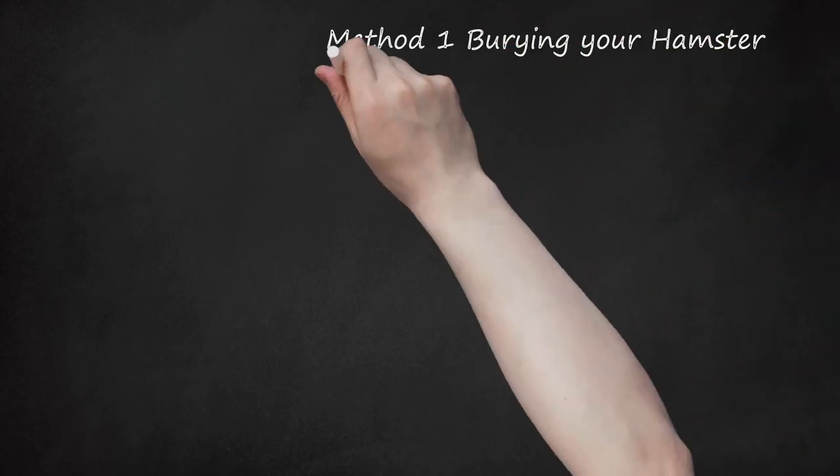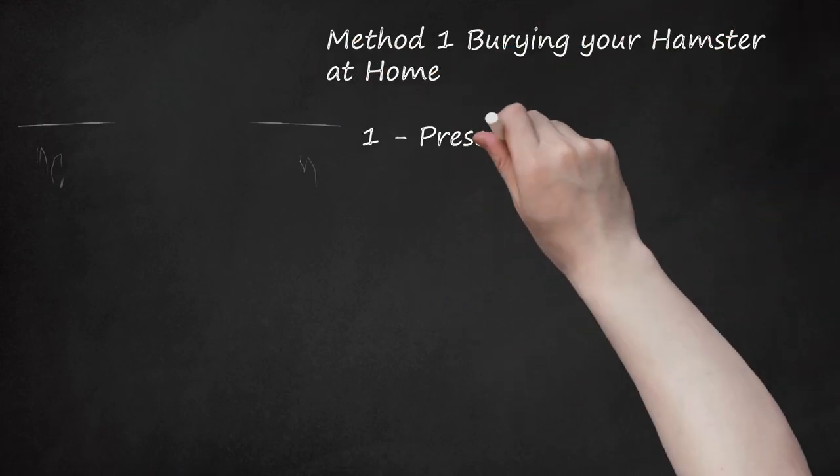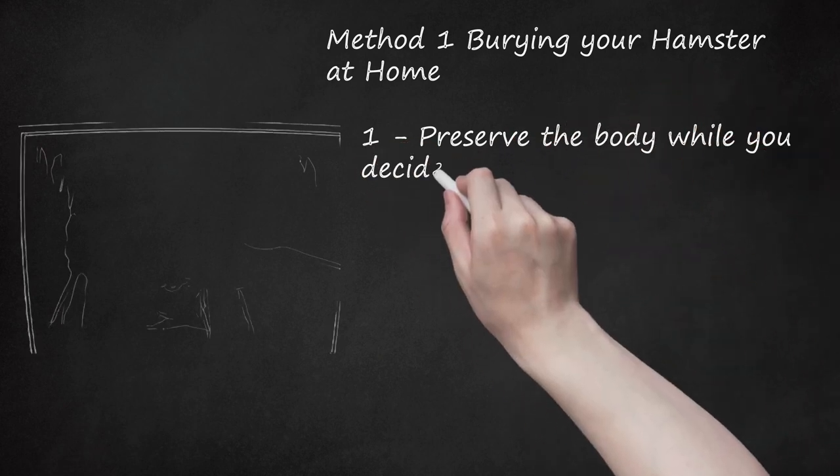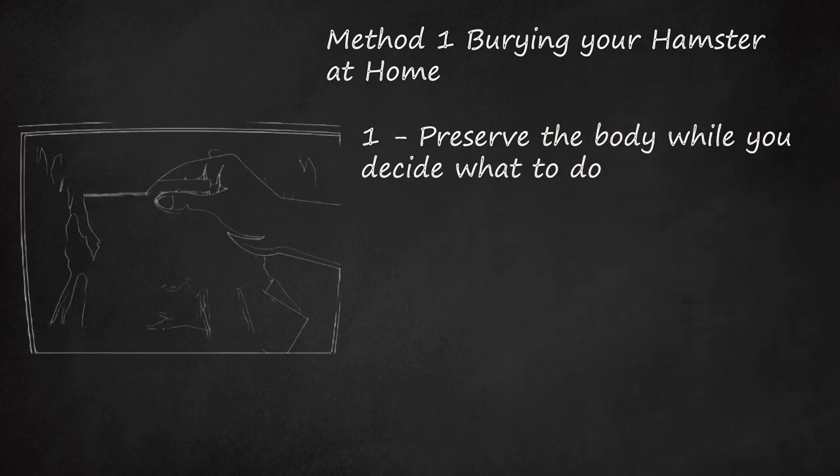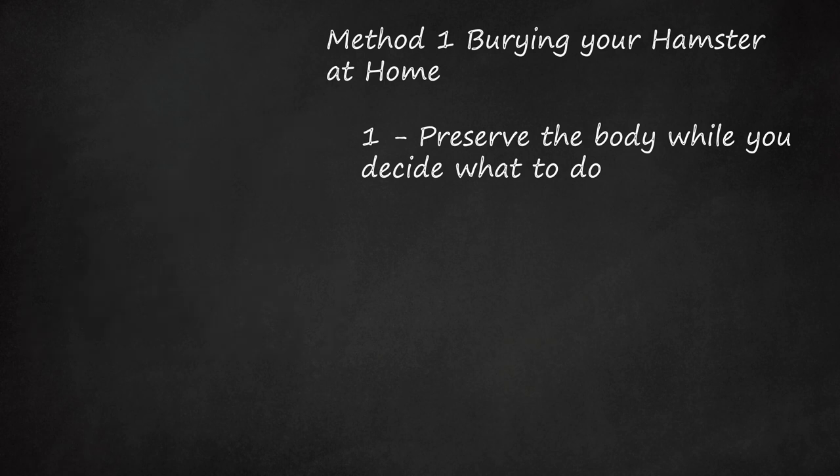Method 1: Burying Your Hamster at Home. Step 1: Preserve the body while you decide what to do. Animal remains immediately biodegrade and start to smell. Place the hamster in a sealed plastic bag and keep it cool. You can keep it in the freezer. Be sure you dispose of the body within 24 hours.